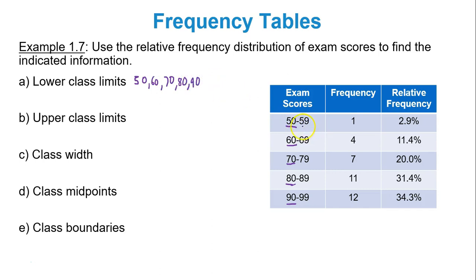What about the upper class limits? The bigger number in each class. We have 59, 69, 79, 89, and 99. And the class width, remember that is the difference between the lower class limits or the upper class limits of two consecutive classes. What is the difference between 50 and 60? 60 minus 50 is 10. 70 minus 60 is 10. 10 is the class width.